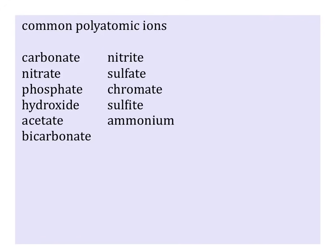Listed here are some common polyatomic ions. You will find them in bold letters on your polyatomic ion reference sheet. Most polyatomic ions have an -ate or -ite ending, like carbonate has an -ate ending, and nitrite has an -ite ending. There are a few polyatomic ions that have an -ide ending, like hydroxide. This -ide ending may lead you to believe that the anion is a nonmetal, so watch out for hydroxide and other polyatomic ions that end in -ide.